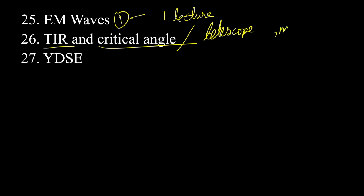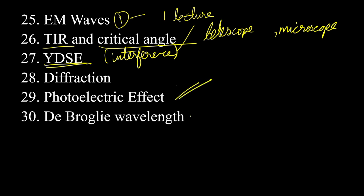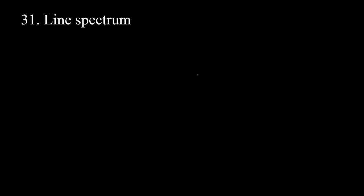There are other important topics: Young's double slit experiment, interference, diffraction. Polarization is also important. Photoelectric effect. De Broglie wavelength. Line spectrum — Lyman and Balmer series. The formula: 1 by lambda is equal to R Z squared times (1/N1 squared minus 1/N2 squared).